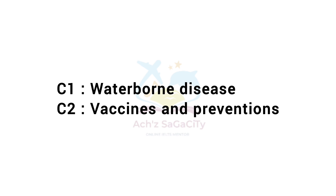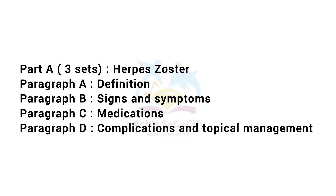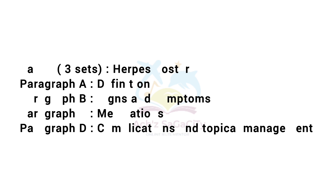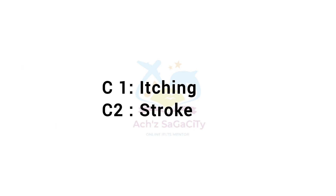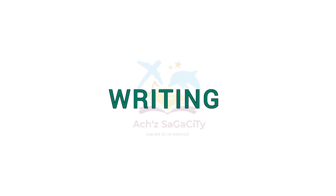The third set of reading Part A was about herpes zoster. Paragraph A included the definition, paragraph B signs and symptoms, paragraph C medications, and paragraph D complications and topical management. C1 and C2 included itching and stroke. You can comment your experiences and question categories below.